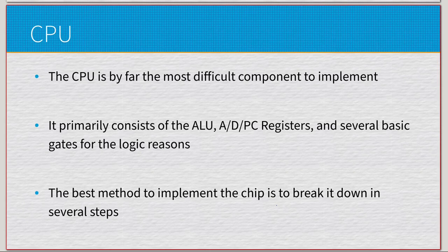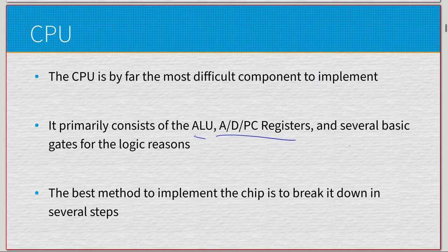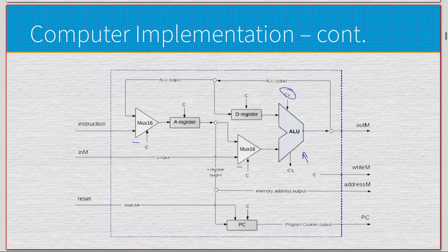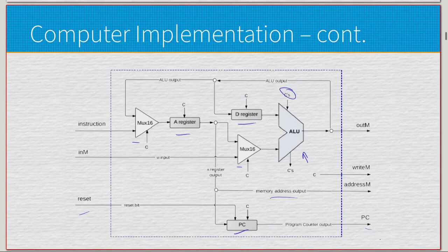The CPU is the most difficult part by far — there are so many parts. We have the ALU, the A, D, and PC registers, and then a good bit of logic gates for the jump. We have a collection of muxes, the ALU itself, control bits going into the ALU, a D register, and the program counter register, along with memory address, reset pins, and output for the program counter.